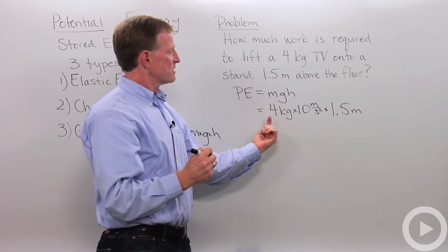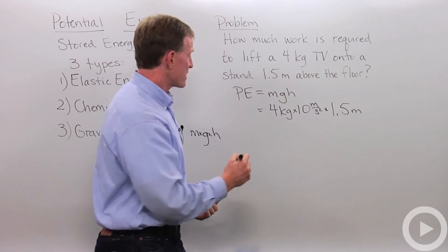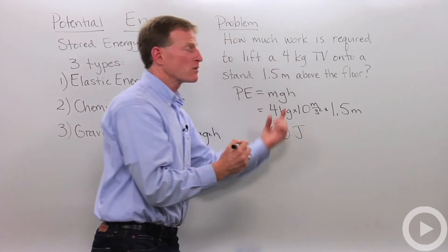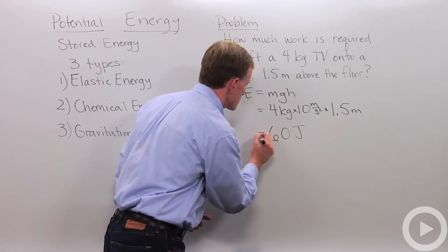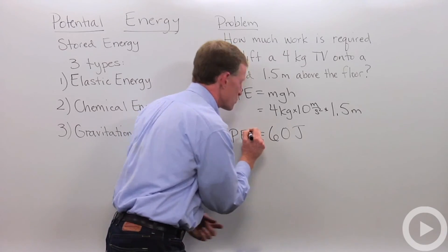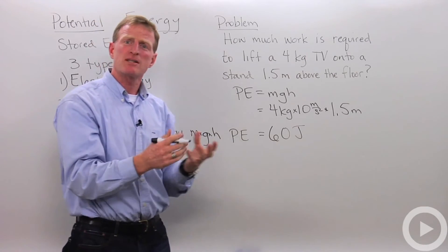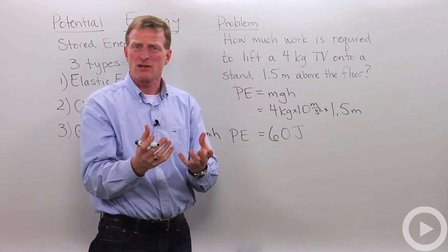And if I multiply this, 4 and 10, 1.5, I get 60. And the unit for work or energy is joules, so the potential energy in that stored TV up there is 60 joules. So this is how you might solve a problem on potential energy.